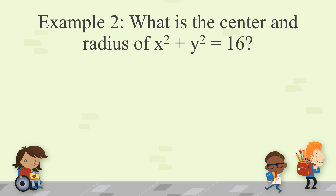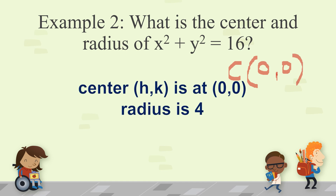Example number 2: What is the center and radius of x squared plus y squared is equal to 16? In this case, there is no h or k visible beside x squared and y squared, which means the center is at the origin, (0, 0). The radius is the square root of 16, which equals 4. So center is (0, 0) and radius is 4.